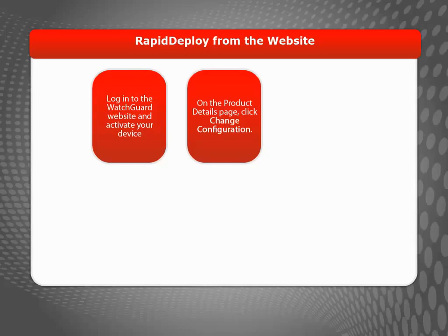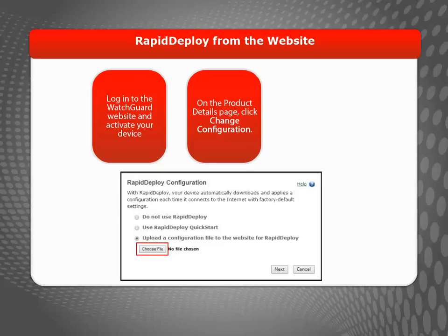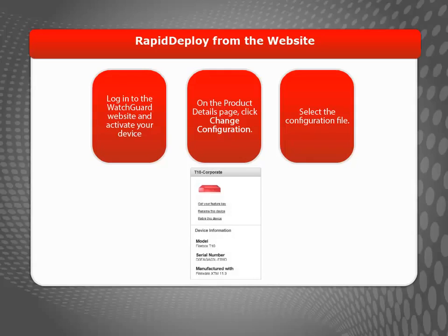To upload a configuration file for an activated device, log in to the WatchGuard website and go to the product details page for that device. In the Rapid Deploy section, click Change Configuration and then click Choose File. Finally, browse to the configuration file you created. This Rapid Deploy option is supported for Firebox devices and for XTM devices manufactured with Fireware XTM version 11.6.3 or higher.